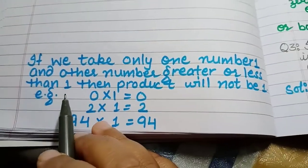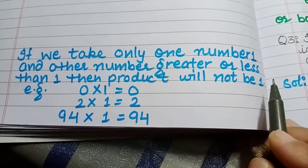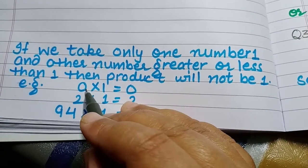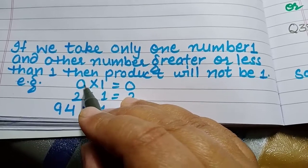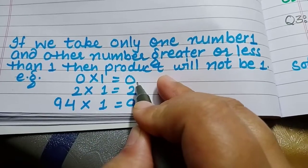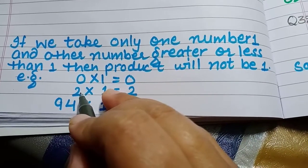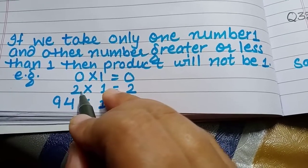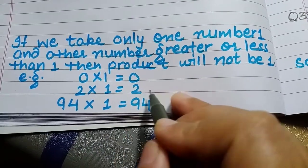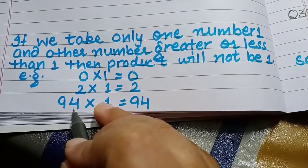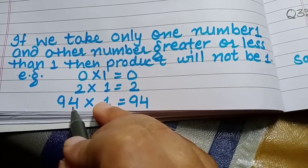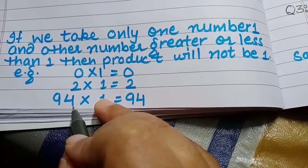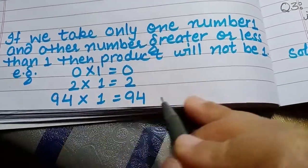If we take only one number as 1 and the other number greater or less than 1, then the product will not be 1. For example, if we take a number less than 1, that is 0, then 0 into 1 will be 0. If we take a number greater than 1, for example 2, then 2 into 1 will be 2. If we take any other number like 94 into 1, the answer will again be that bigger number itself.